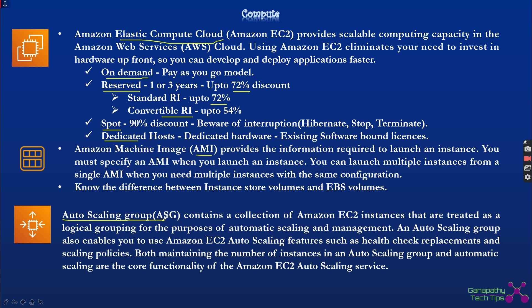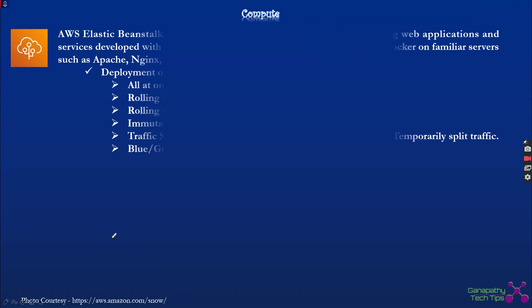Auto Scaling Groups involve the logical grouping of EC2 instances treated as a single entity, enabling automatic scaling and management. Auto Scaling Groups enable EC2 auto scaling features for health check replacements and scaling policies. Based on demand or CPU needs, you can scale out horizontally. You can define the desired instance count and specify which factors — such as CPU utilization — trigger scaling, so horizontal scaling happens based on the policies you define in the Auto Scaling Group.